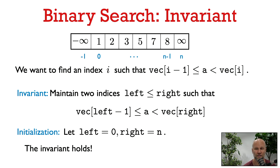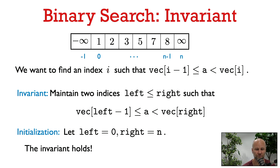At the start of the algorithm, we let left be zero and right be n. Since we've padded the array with minus infinity and infinity on the endpoints, we're guaranteed that left and right satisfy the invariant with this initialization. The algorithm ends when left is equal to right — by the definition of the invariant at that time, we've found the index i. We can output left as the answer, or right, since they're equal.